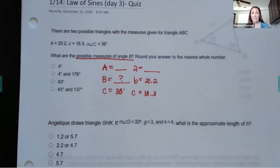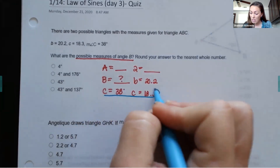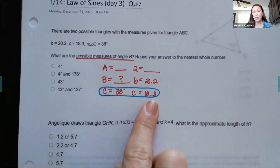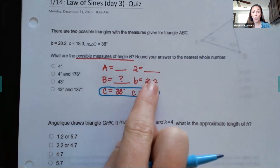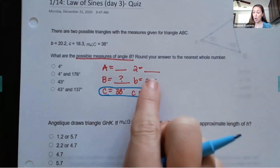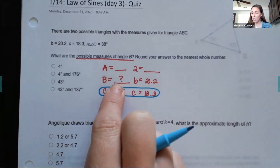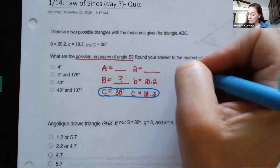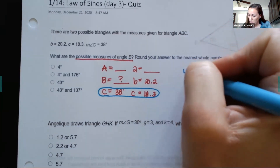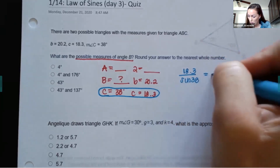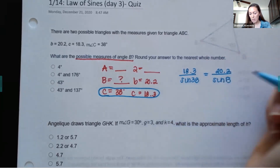Remember Law of Sines — I need to have a full set, meaning I have the angle and the corresponding side. And in order to use the Law of Sines, if I'm looking for an angle or a side, I need to know one of the two for that other set. So I know my side B, so I can find the unknown angle B. So I set up: 18.3 over sine of 38 is equal to 20.2 over sine of B.